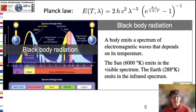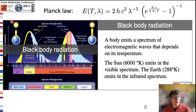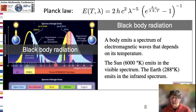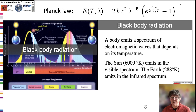The second card is called Black Body Radiation. It describes the spectrum of electromagnetic waves emitted by a black body. The Sun, at 6000 Kelvin, emits in the visible spectrum, while Earth, much cooler, emits in the infrared spectrum — the two spectra are well separated. We see that greenhouse gases such as carbon dioxide or methane are absorbing in the infrared spectrum but are transparent in the visible spectrum.